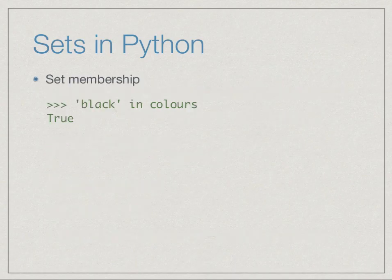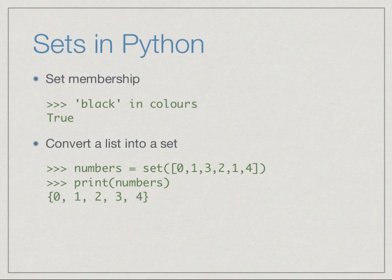Like lists and other data structures, we can test membership using 'in'. So if in the previous set 'colors' — which had red, black, and green — we ask whether 'black' is in 'colors' using the word 'in', then the return value is True.